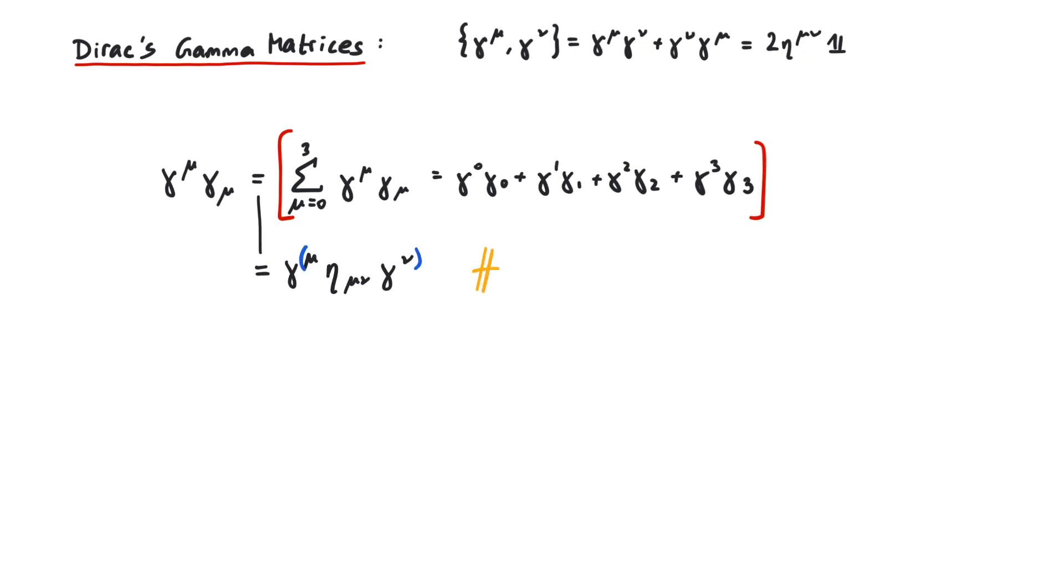This is because the contraction of a symmetric tensor and an anti-symmetric tensor is zero. Therefore only the symmetric part remains.